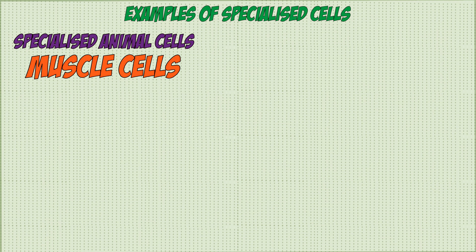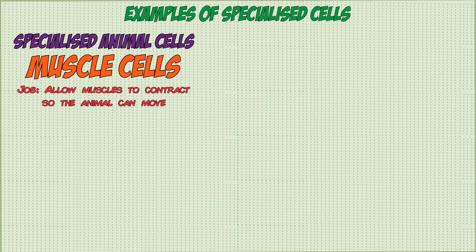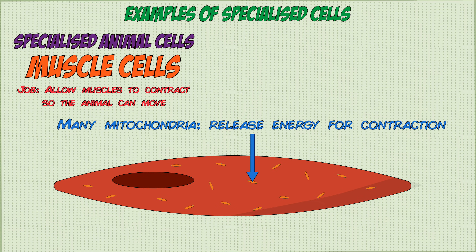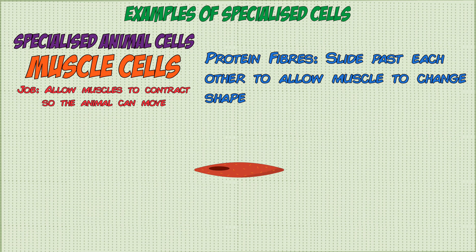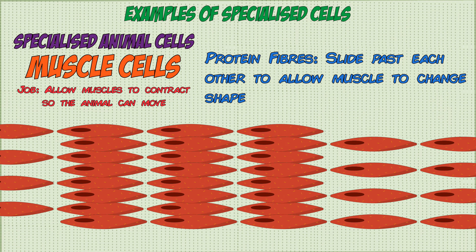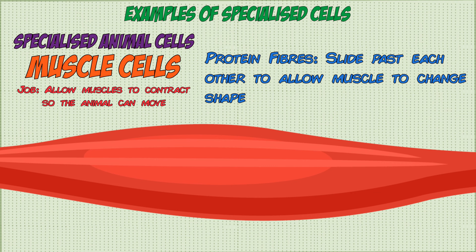Muscle cells are specialized cells designed to make the muscles contract and relax, allowing the animal to move. They contain a large number of mitochondria, which release energy for contraction. They also have specialized protein fibers which can slide past each other, allowing the muscle to change length and thereby contract and relax.